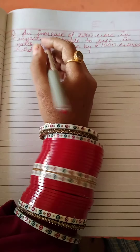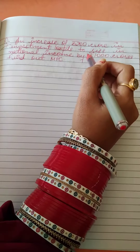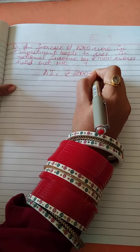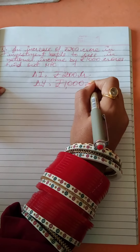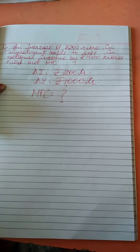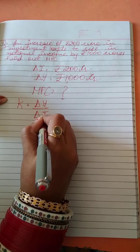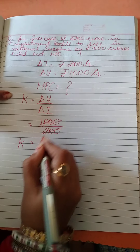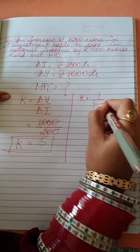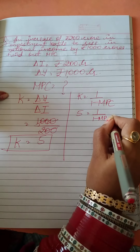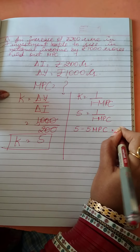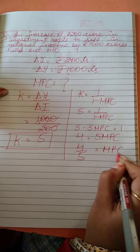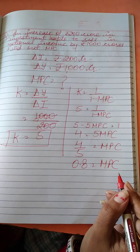Second numerical: An increase of rupees 200 crore in investment leads to a rise in national income by 1000 crore. Find MPC. K = delta Y/delta I = 1000/200 = 5. Now K = 1/(1−MPC), so 5 = 1/(1−MPC), giving 5(1−MPC) = 1, so 5 − 5·MPC = 1, therefore 5·MPC = 4, and MPC = 4/5 = 0.8.